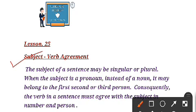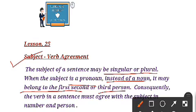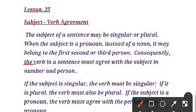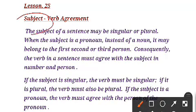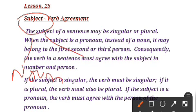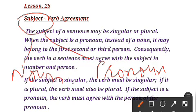Here we are going to study about subject-verb agreement. On the screen you can see it is written that the subject of a sentence may be singular or plural. When the subject is a pronoun instead of a noun, it may belong to the first, second, or third person. Consequently, the verb in a sentence must agree with the subject in number and person.